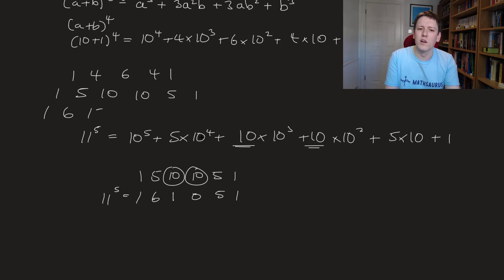So if I do one more, the next row in Pascal's triangle here is 1, 6, 15, 20, 15, 6, 1, so we could kind of do the same thing. I'll just put a circle around those numbers that we're kind of thinking of as digits as we do it.